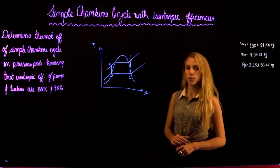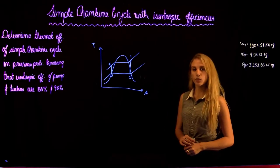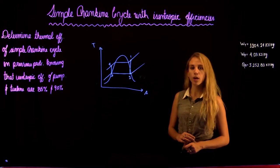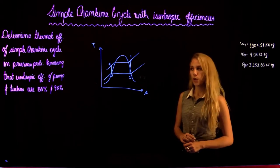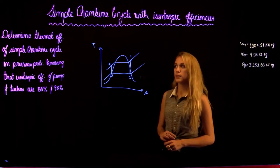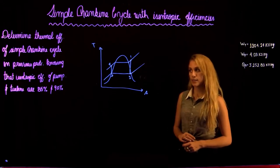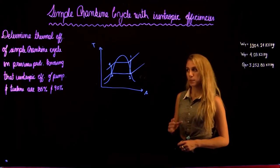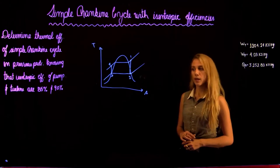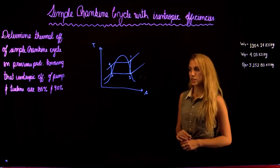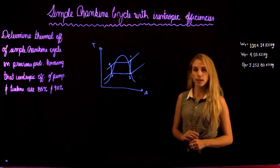Hello and welcome back to Thermodynamics 2 tutorials with Noria. We're going to be solving the second part of the sample Rankine Cycle. We are asked to determine the thermal efficiency, knowing that the isentropic efficiency of the pump and the turbine are 85 and 90%.